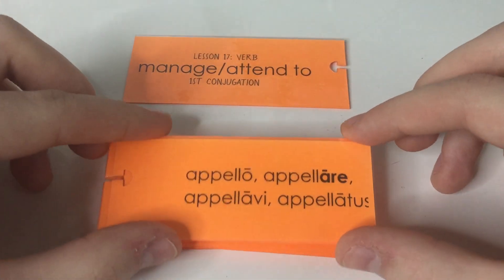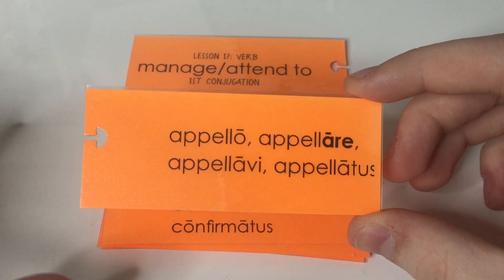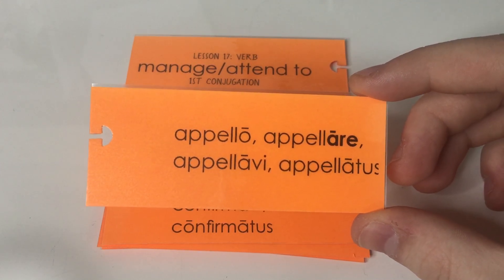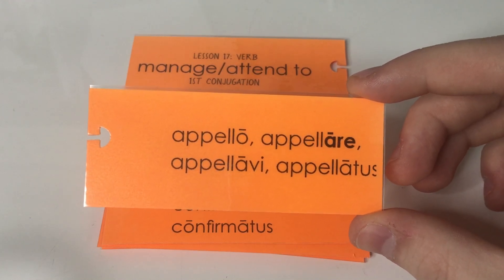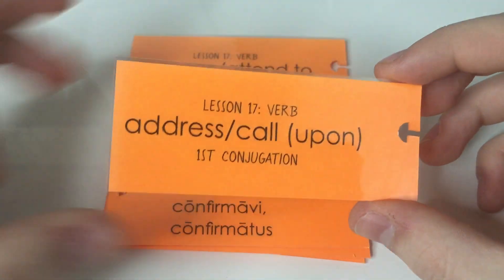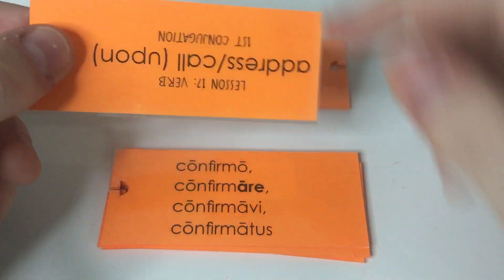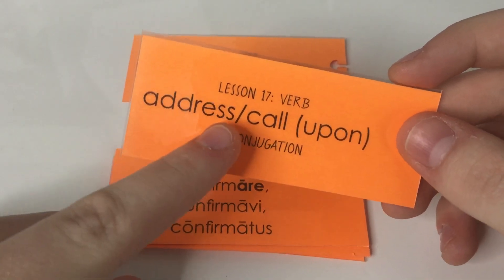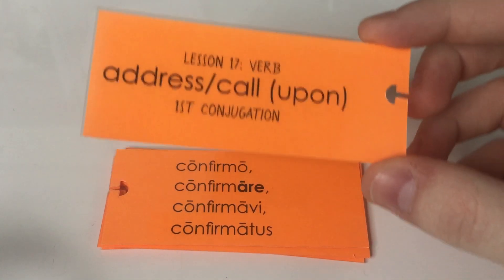And then we have apello, appellare, appellavi, appellatus. It's kind of funny how I like to remember this one. I basically flip and switch the Ps so that they look like Ds. And if you do that, then all you have to do is add the rest. So apello means address — I flipped the Ps and added on the rest. Except there's no T; it's not addressed, it's just address. Or call upon.